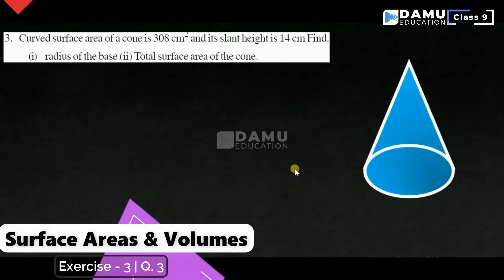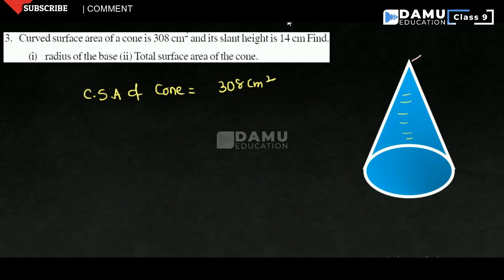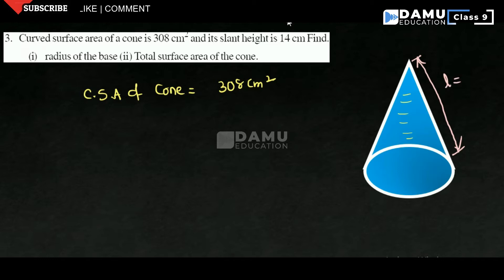The third question is about the curved surface area of a cone. The curved surface area given is 308 cm², and the slant height is 14 cm. The slant height is measured along the side of the cone — any line on the curved surface from the apex to the base edge is called the slant line, and here it is 14 cm.